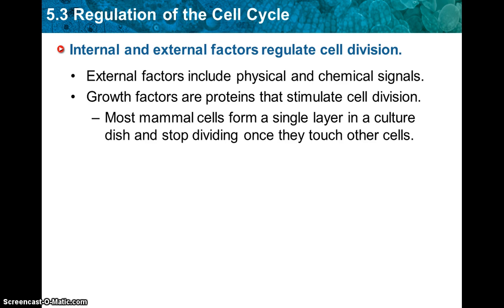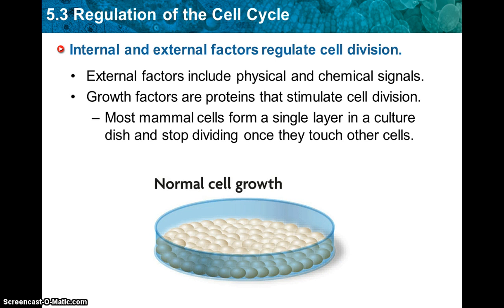Most mammal cells form a single layer in a culture dish and stop dividing once they touch other cells. Here is an example of normal cell growth in a petri dish. The cells grow and keep growing until they're all touching.